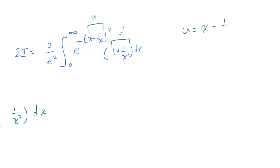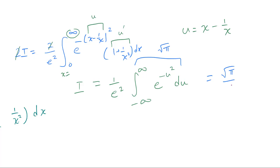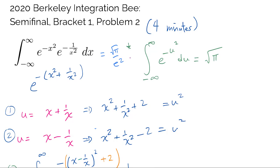Now let u be x minus 1 over x — we certainly have u prime outside. So canceling the twos, we have 1 over e squared times the integral. As x approaches 0, x minus 1 over x blows up to negative infinity, and as x gets very large, x dominates and goes to positive infinity. So we have the integral from negative infinity to infinity of e to the negative u squared du. We have seen this before — this is precisely the Gaussian integral, evaluating to square root of pi. Therefore our answer is square root of pi over e squared. I hope you enjoyed the video.